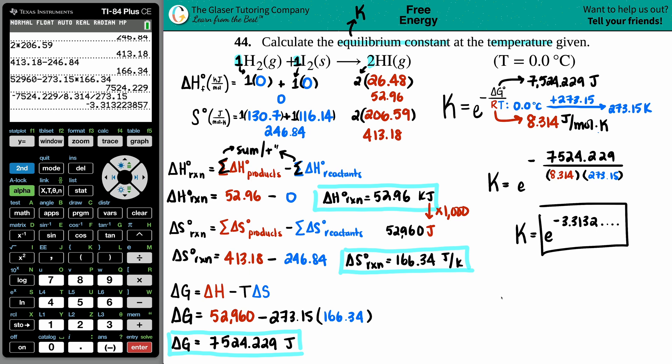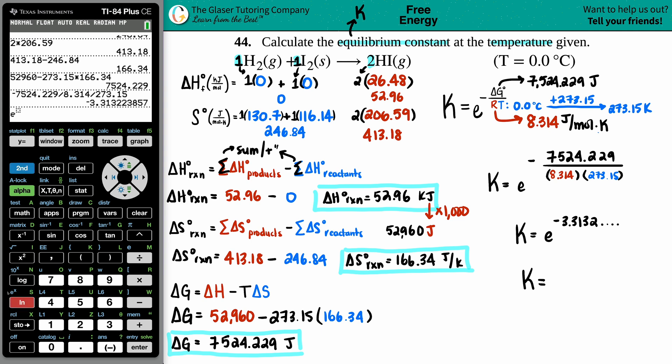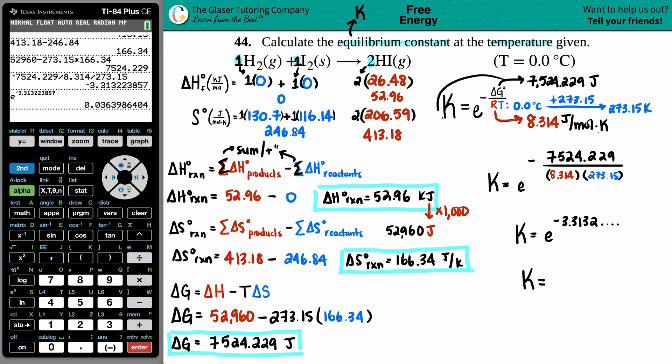Let's take the e value, so K equals - drum roll please - second LN, that's where you'll find the e button, and it's already raised for you. So all I got to do is just grab that whole number and press enter. Seems like I guess four sig figs at the end of the day - the R value had the four sig figs.